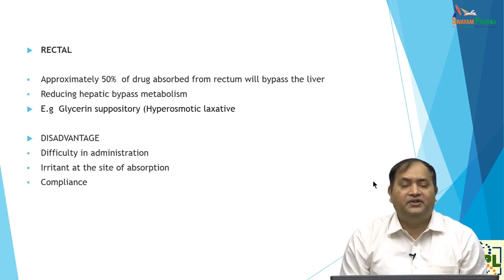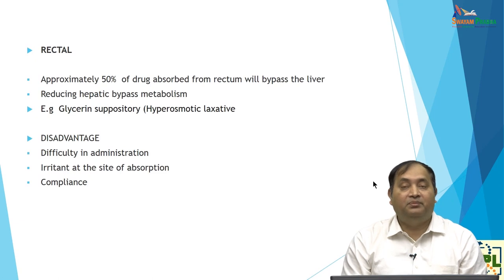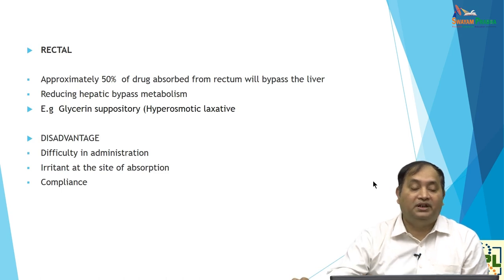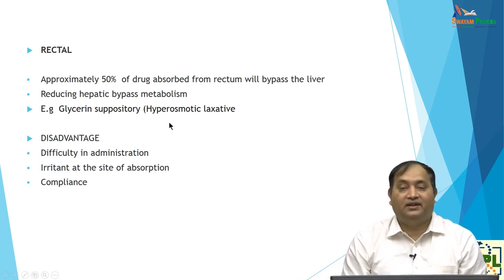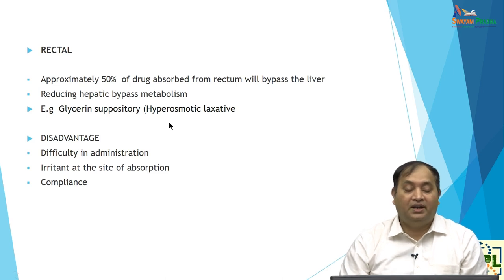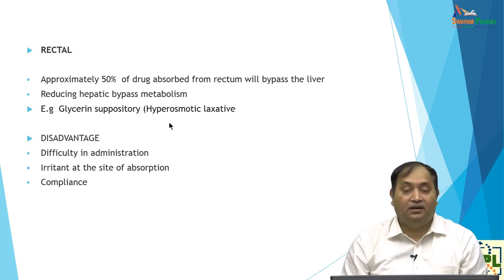Rectal route is not preferred but used in pediatric patients with fever for antipyretics. Approximately 50% of the drug is absorbed from the rectum, and it also bypasses liver metabolism. For example, glycerin is given rectally as a hyperosmotic laxative. The disadvantage is that it is difficult to administer, people do not prefer it, it can be irritant to the site of absorption, and compliance is very poor.